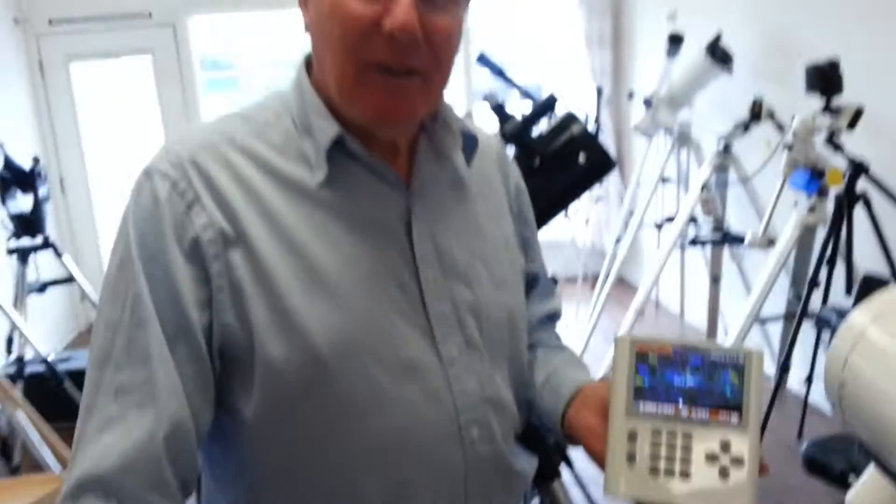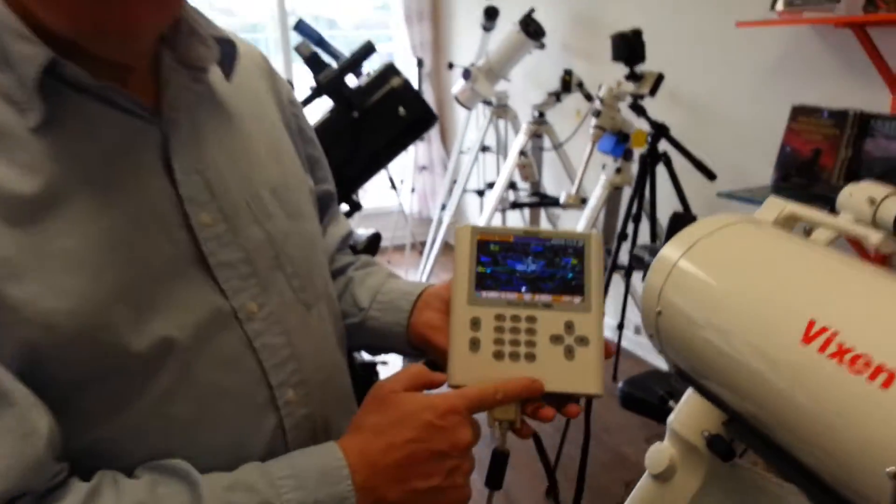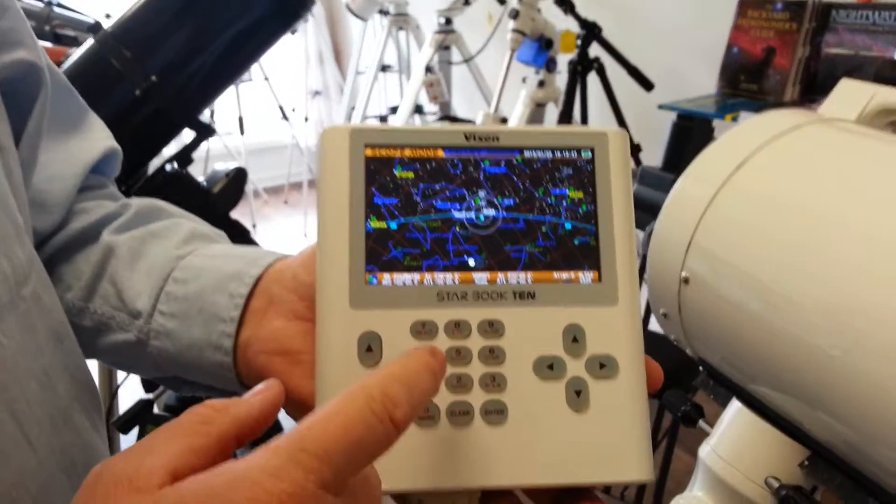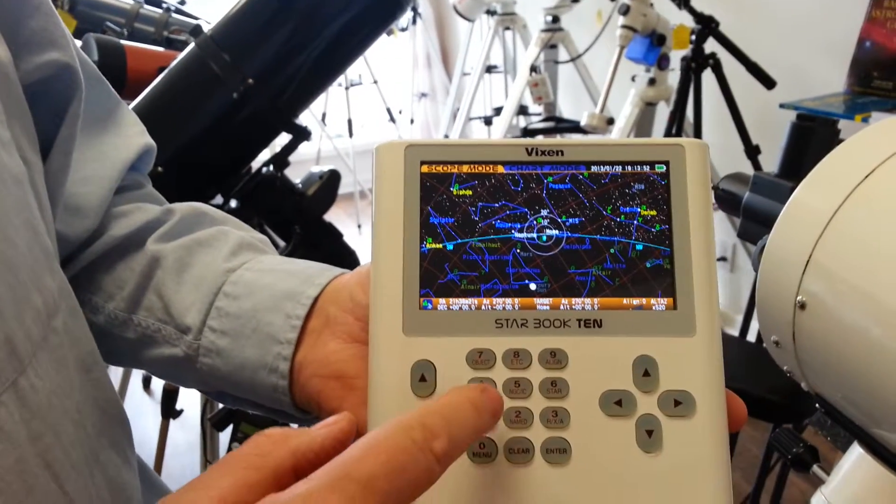Brian, why don't you just give us a quick demo? I'll do a little demo. I'm going to tell the Starbook 10, which has 275,000 objects in it. That's it? That's it. I'm sorry. Not more than that.